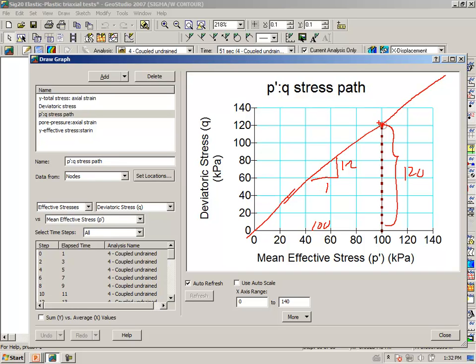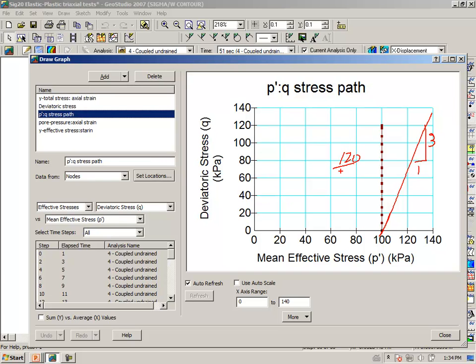So we know that the deviatoric stress at failure is 120 kPa. We know from triaxial test behavior that the total stress path during the loading follows a path that is at 3 vertical to 1 horizontal. This distance being 120, 120 divided by 3 makes it 40, and 40 is this distance here, and this is the pore pressure. This is the effective stress. Here's the critical state line. So this is U, the change in the pore pressure during the loading, and it should be 40 kPa.